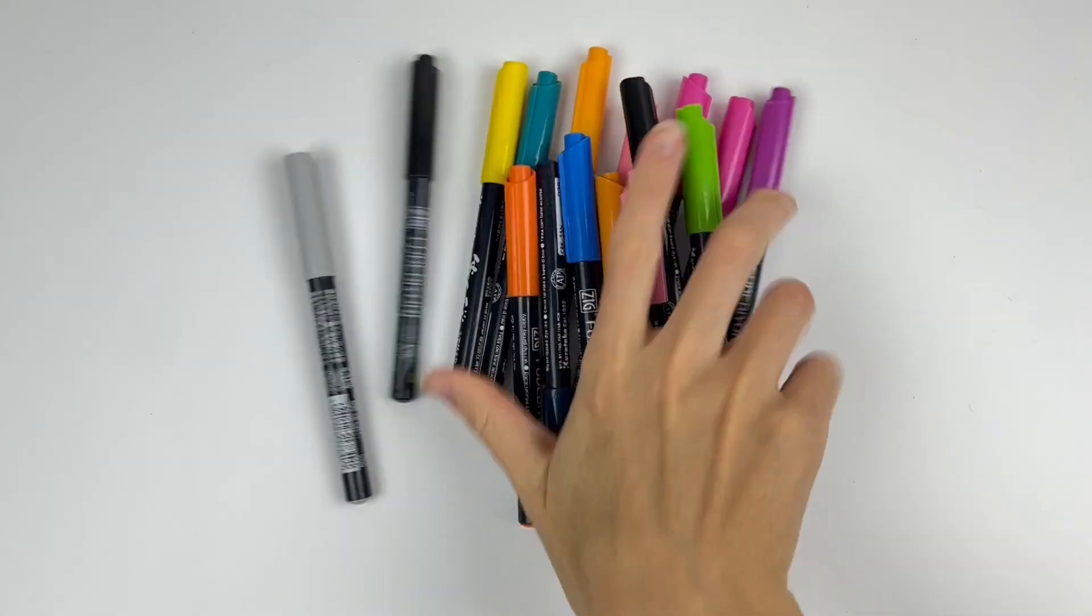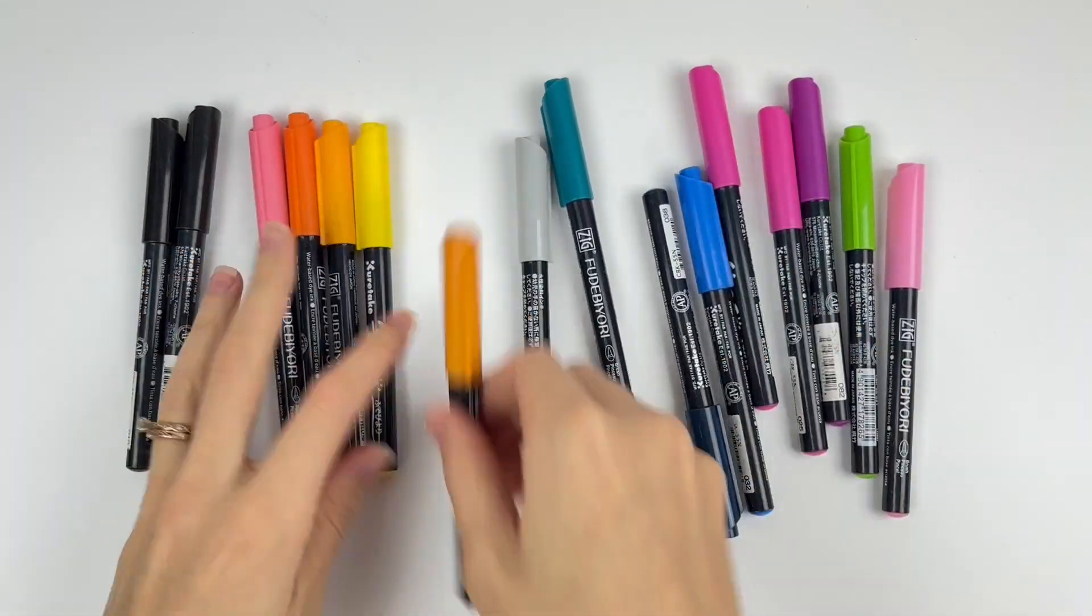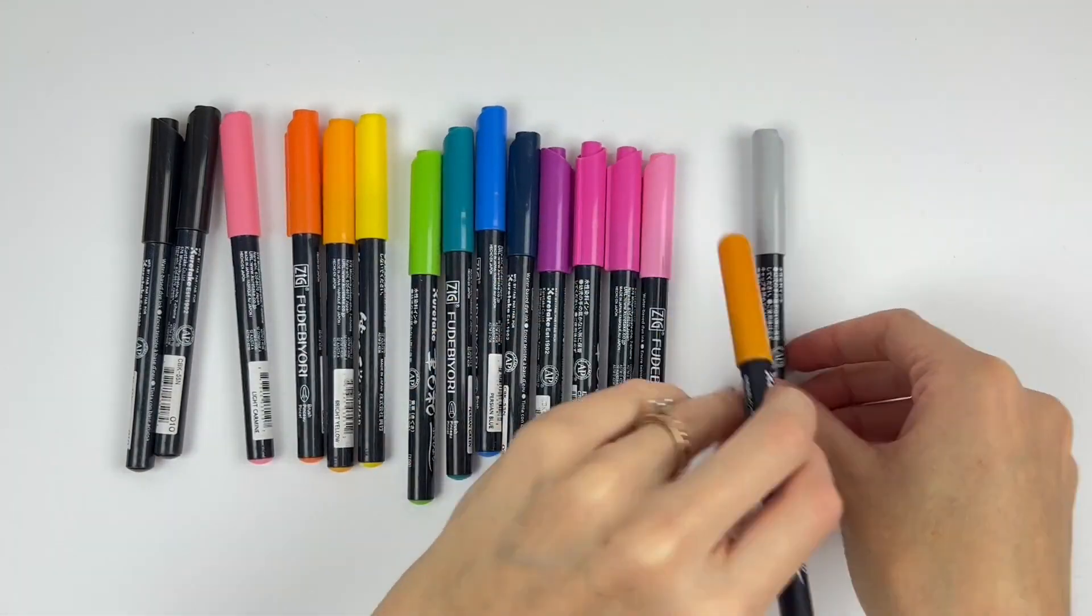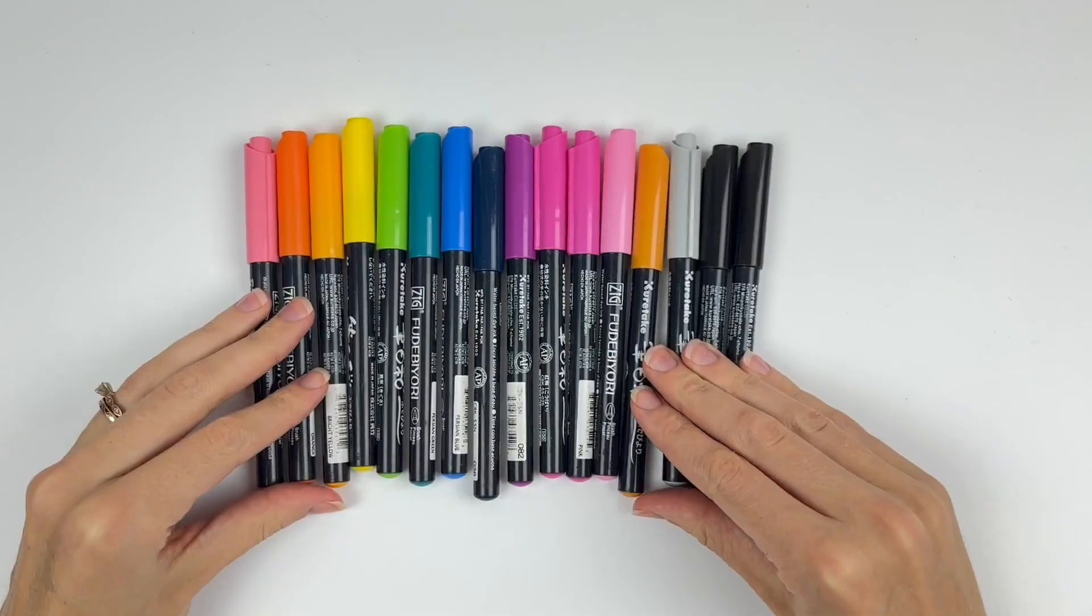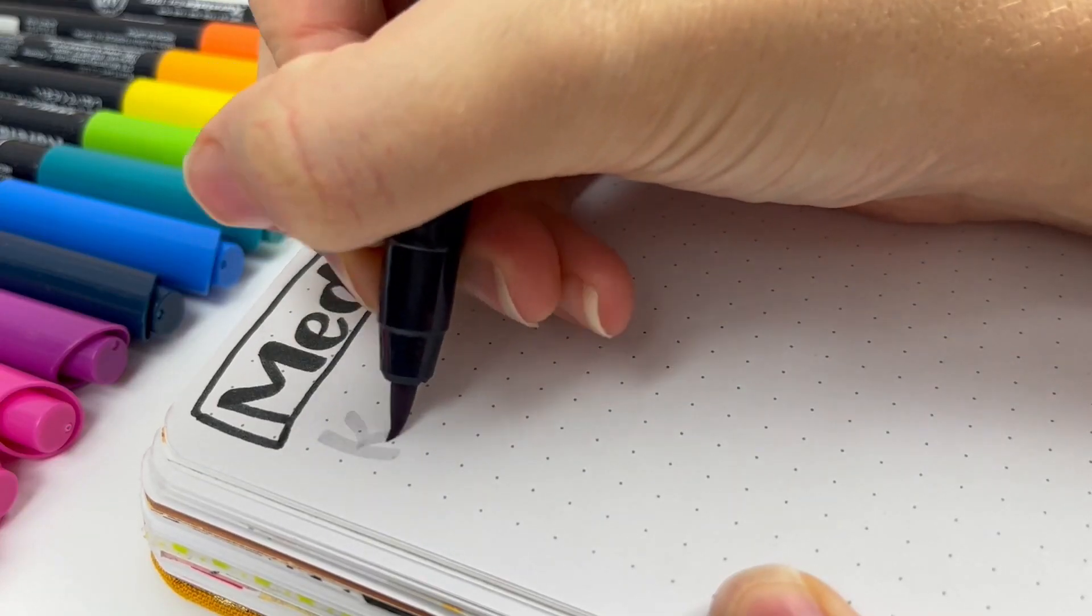The first ones are Kuretake Futabiori. Let me tell you how amazing these were the first time I used them. So I had been trying to letter with Tombow Dual Brush Pens, and if you tried those, you may know that they're a little harder to control. When I tried these Futabiori, I thought all of a sudden I actually do know how to hand letter and it doesn't look too bad.